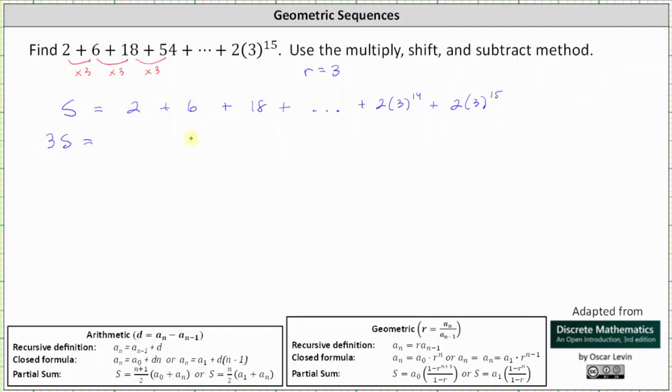We write the 6 below the 6 in the first equation and then plus 3 times 6 is 18 plus continuing to multiply. The term right before 2 times 3 the 14th in the first equation is 2 times 3 the power of 13. And notice 3 times 2 times 3 the 13th is 2 times 3 the 14th.